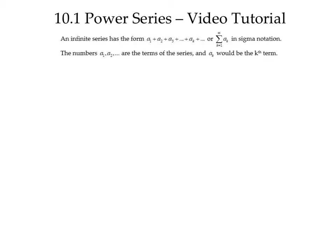Let's start by reminding ourselves about infinite series. An infinite series has the form A1 plus A2 plus A3 plus dot dot dot, plus AK plus dot dot dot, where the dot dot dot means and so on forever, or in sigma notation, sum from k equals 1 to infinity of A sub k. The individual numbers A1, A2, etc., are the terms of the series. AK would be the k-th term.